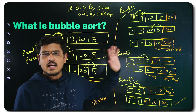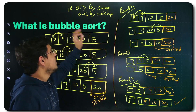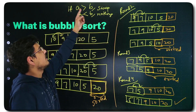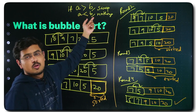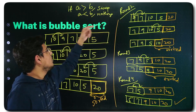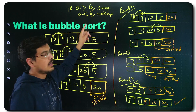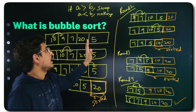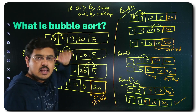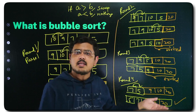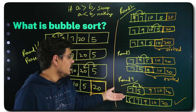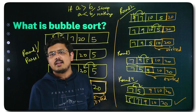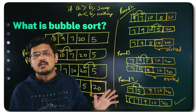This is Bubble Sort — as simple as that. If A is greater than B, swap. If A is smaller than B, do nothing. Keep repeating this step until you get a sorted array.